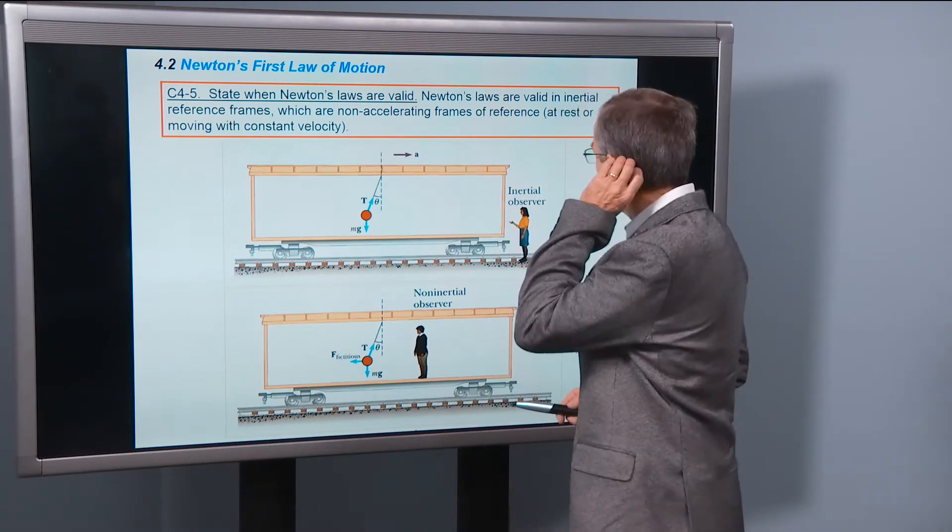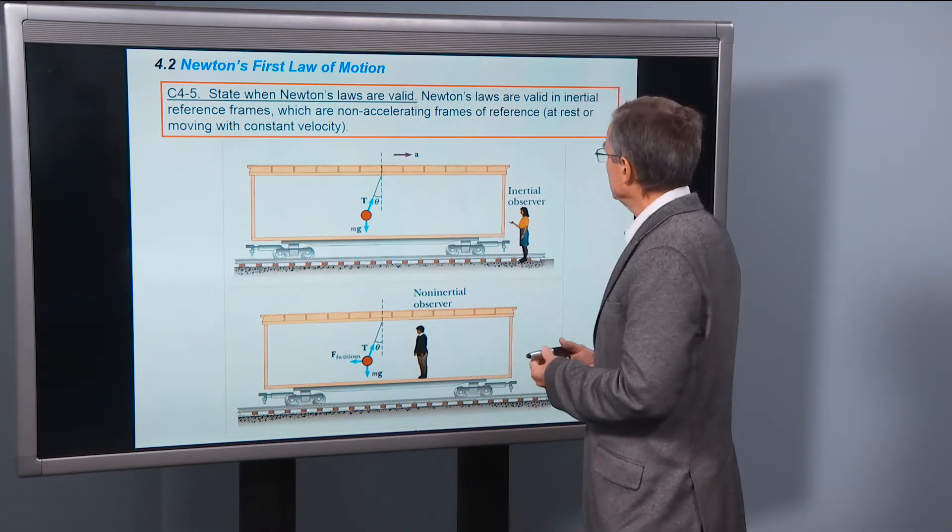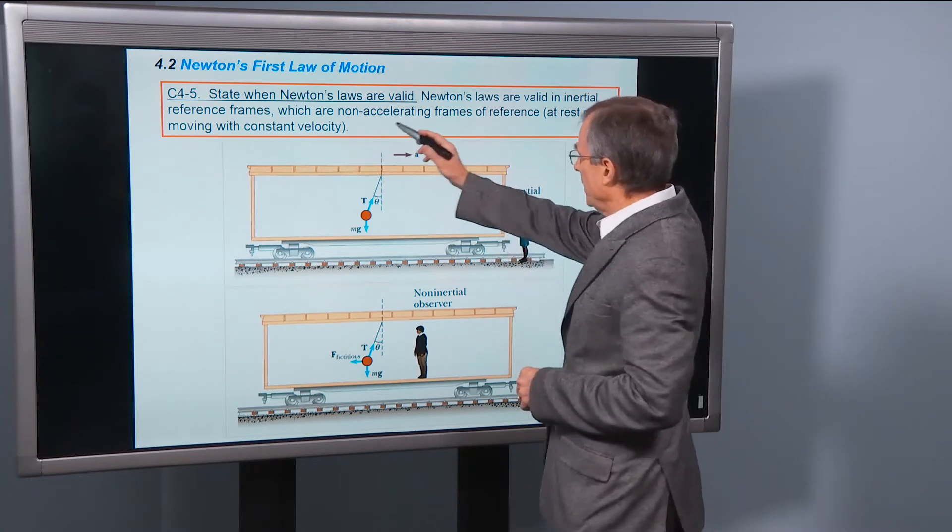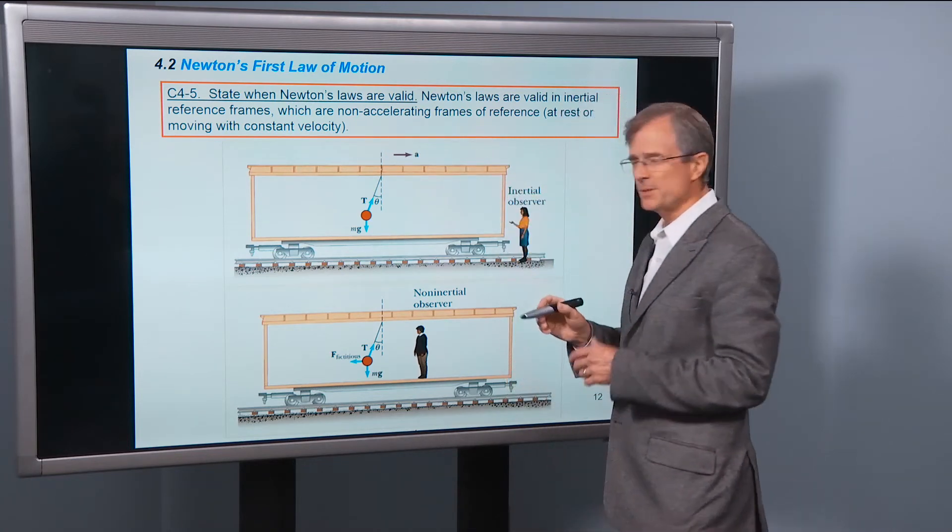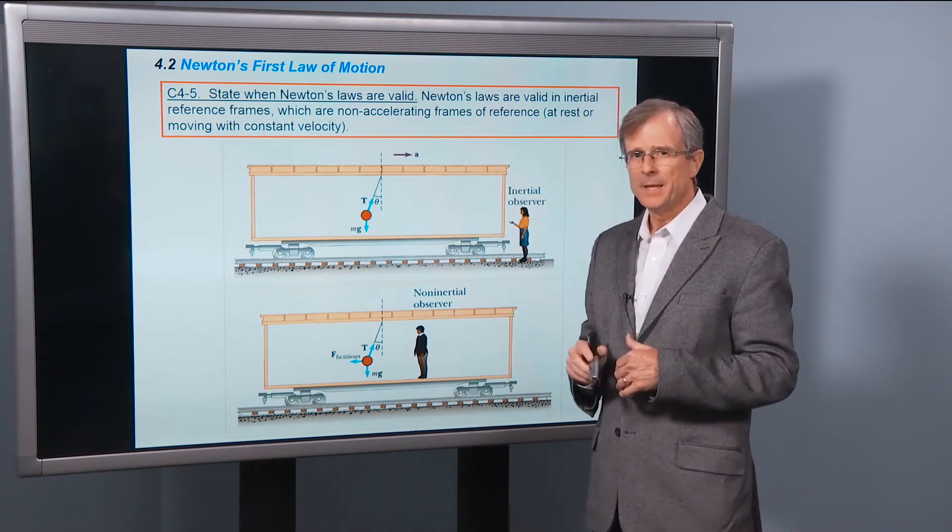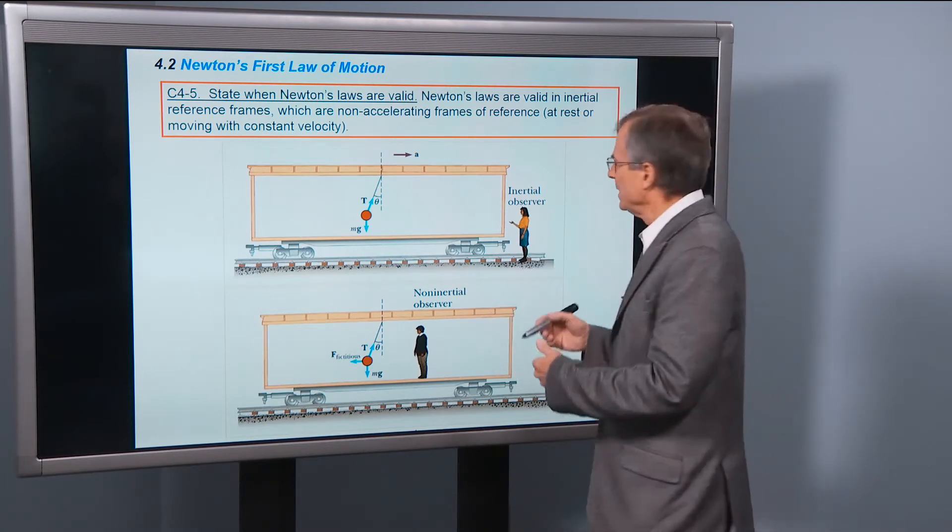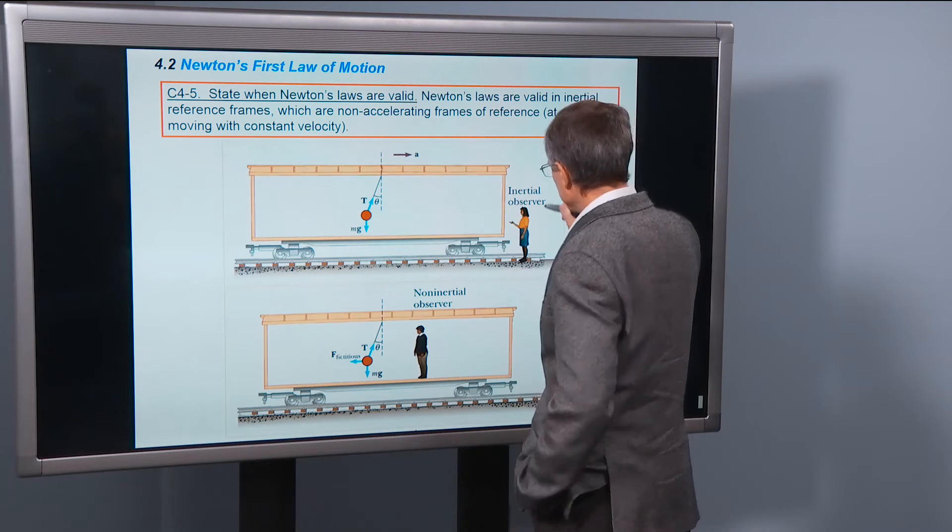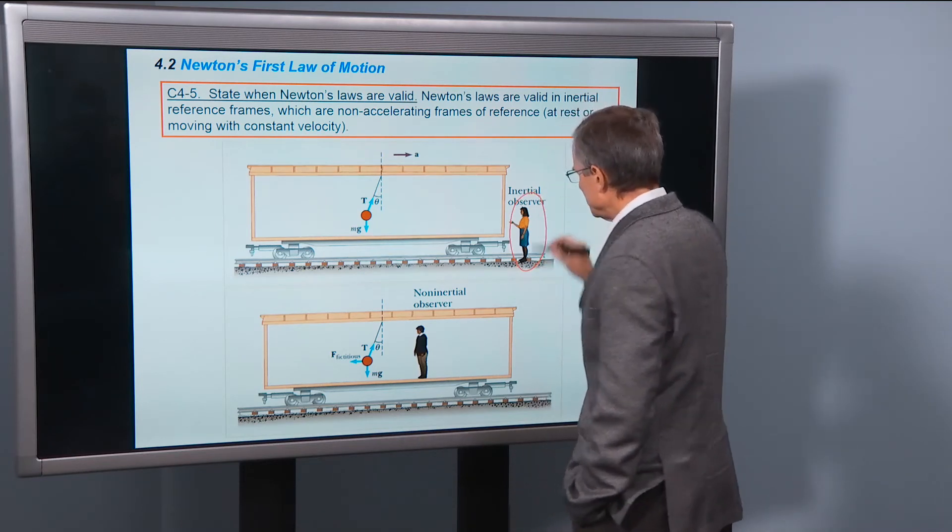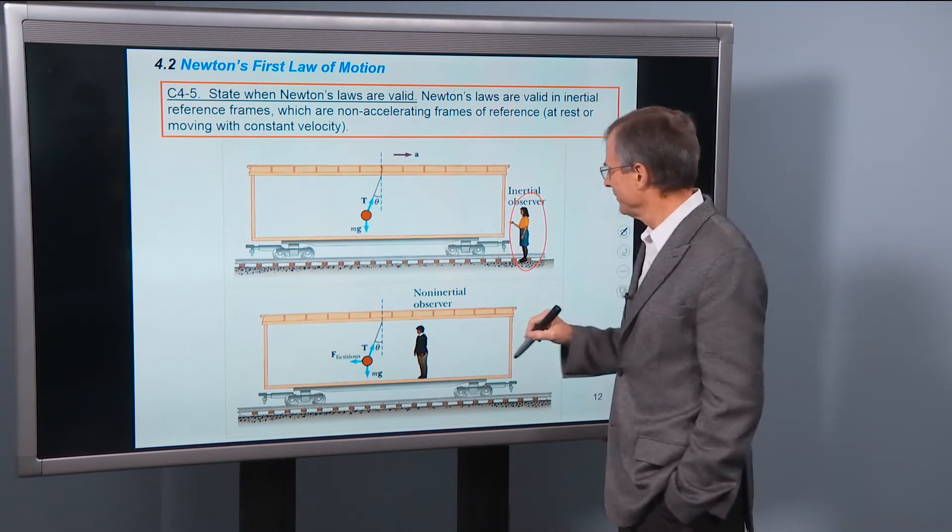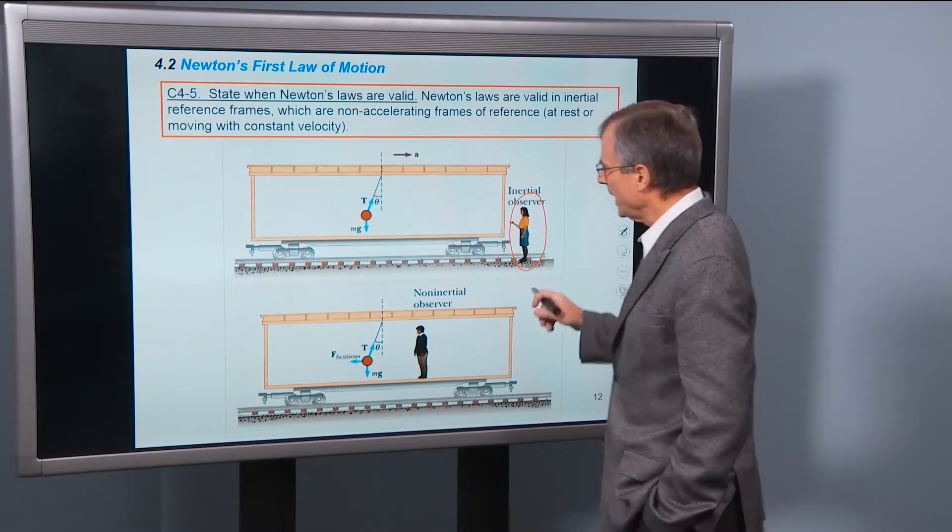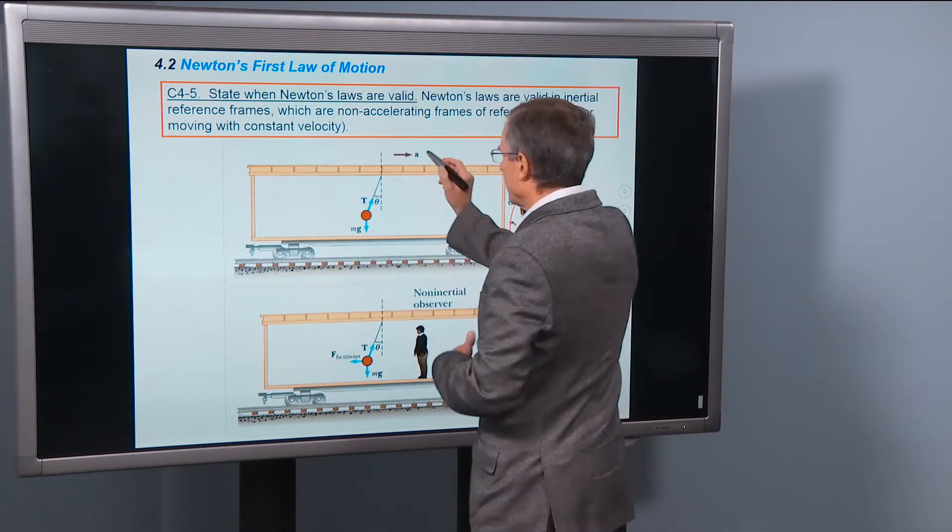Inertial means not accelerating. So let me give you an example. Well, and let me also say, a non-accelerating frame of reference is a frame of reference that is at rest or moving at constant velocity. So here's an example of an inertial reference frame.